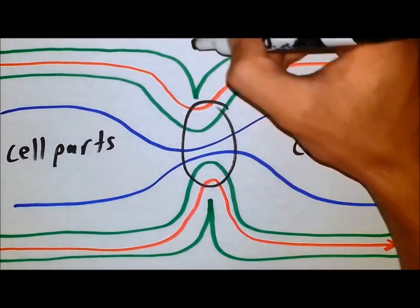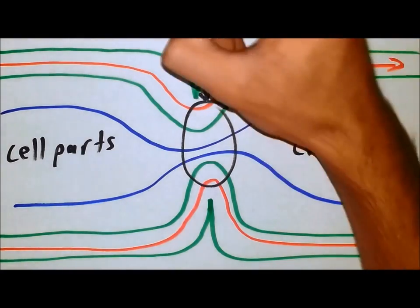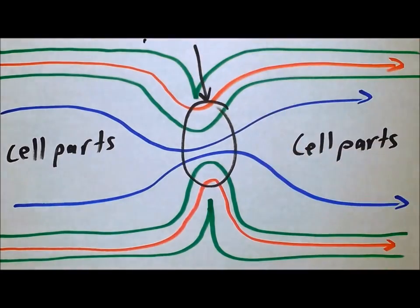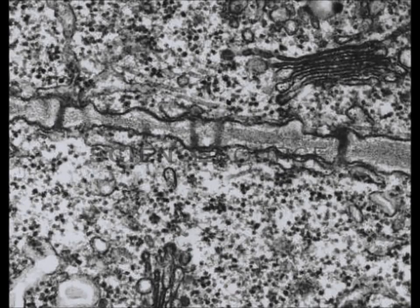The Plasmodesma is located here. This is an example of two cells transporting through the Plasmodesmata located here, here, here, and here.